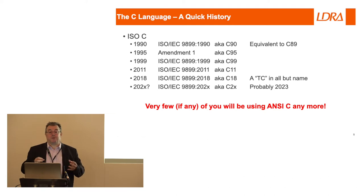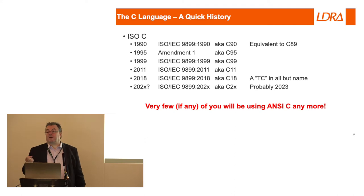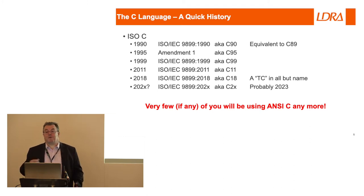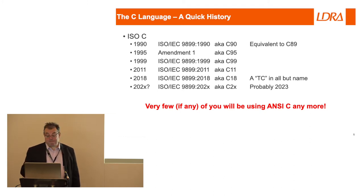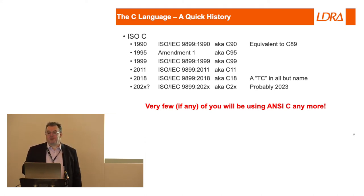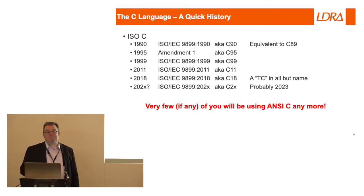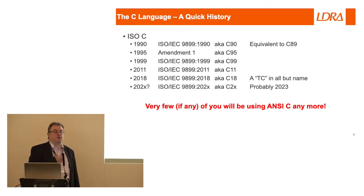That went through some increments, and these are all through a standard process so theoretically the language is close to being consistent irrespective of implementation — more on that later. 1999 there was a fairly big update: C99 is probably now the heart of most common compilers. C11 added a whole load of — to put it bluntly — stuff that most of us really don't use, and hence the current version of MISRA basically says just don't use it. 2018 was a little update they called a TC, but actually snuck in a few changes that most people didn't notice.